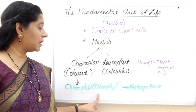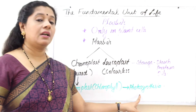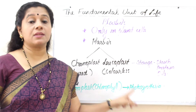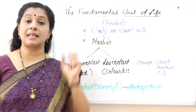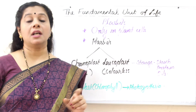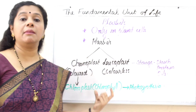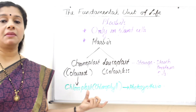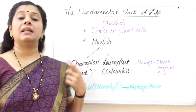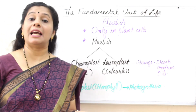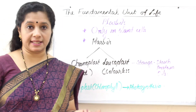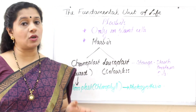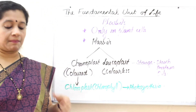The chloroplast has the function of photosynthesis. Since photosynthesis needs sunlight, sunlight can be absorbed only by the chlorophyll pigment. Apart from chlorophyll, there are other pigments like yellow pigments called xanthophyll, or orange pigments called carotene, also present in the chloroplast.